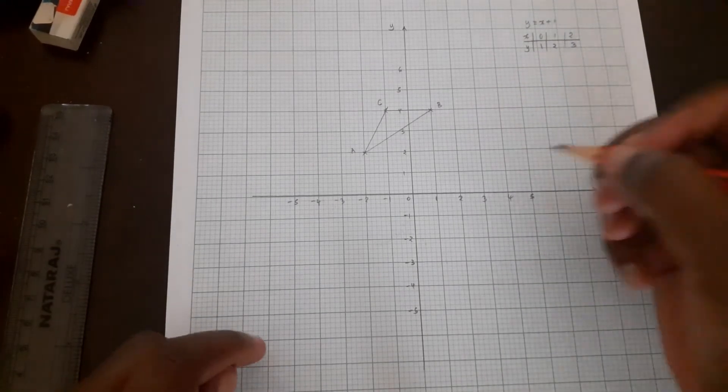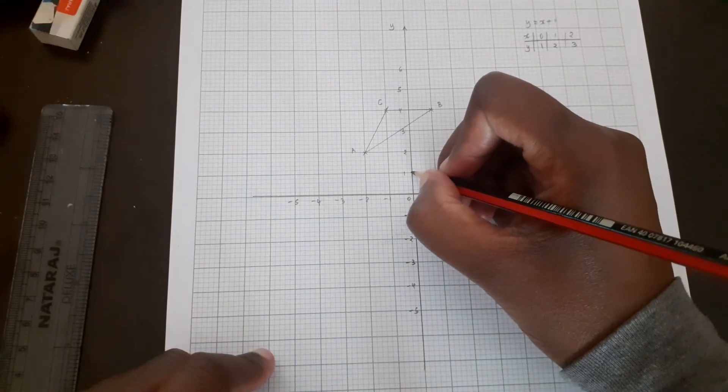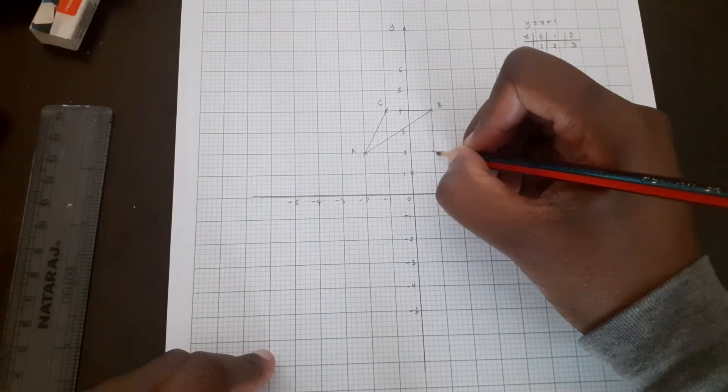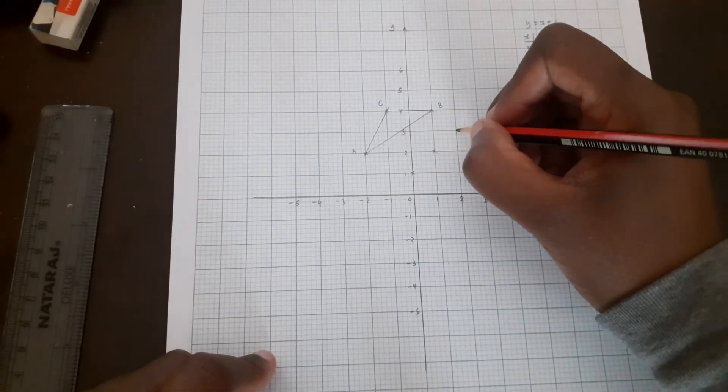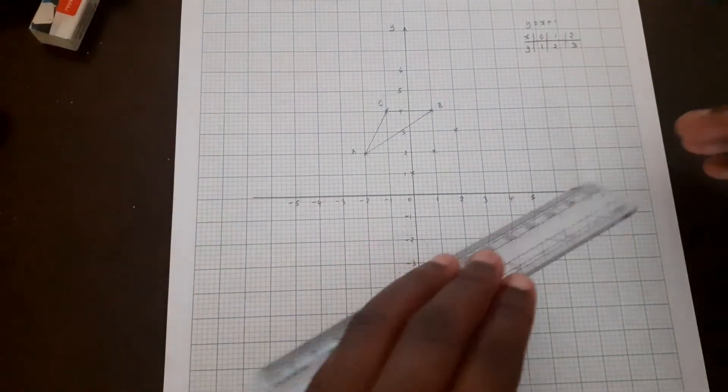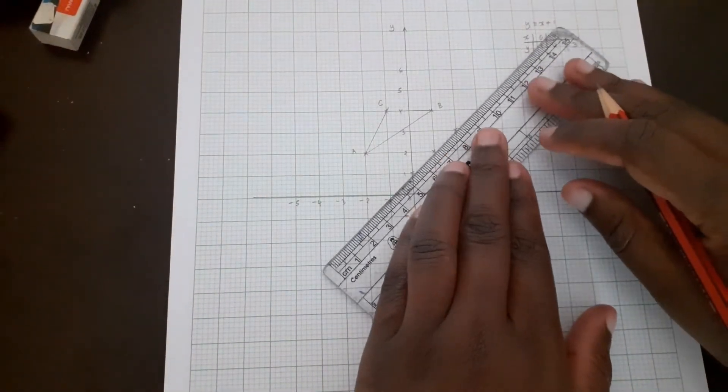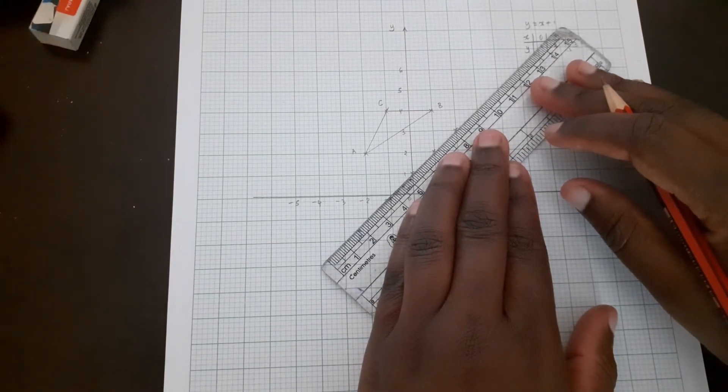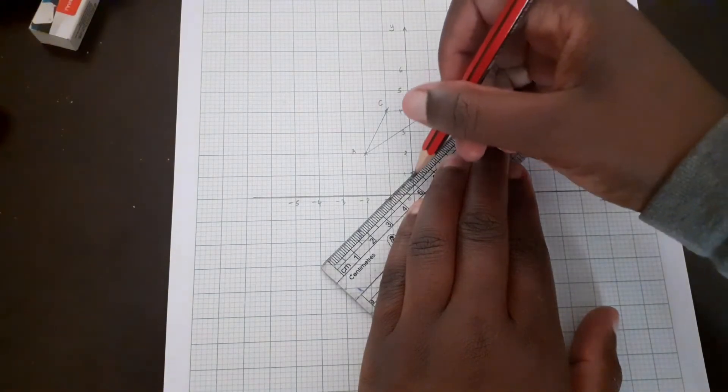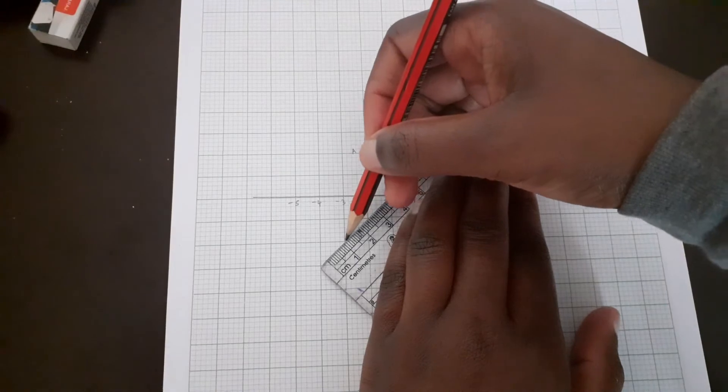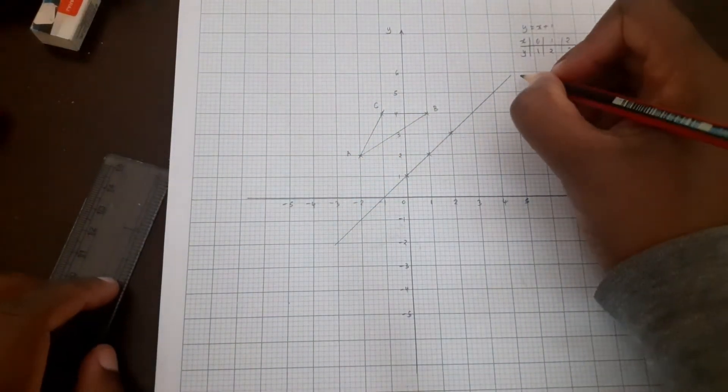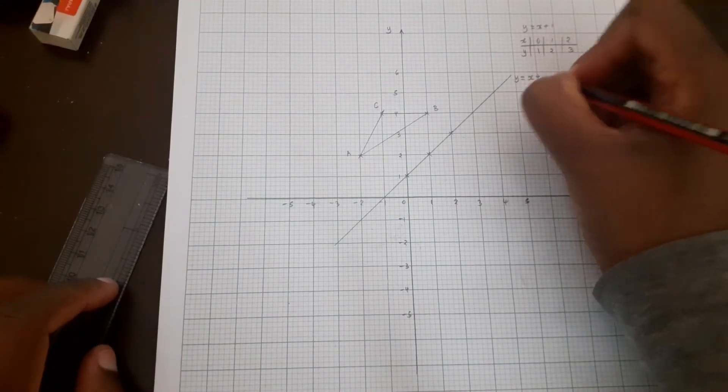We plot the points. We have point (0,1), we have (1,2), and (2,3). Then we join the points. This is the line y equals x plus 1.